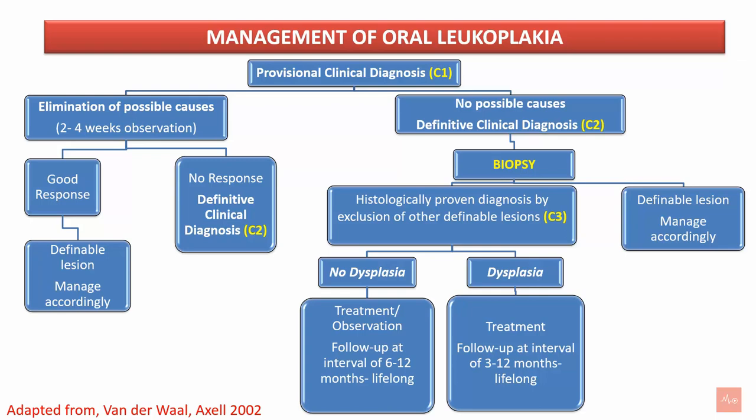Biopsy is advised and a histologically proven diagnosis is made by exclusion of other definable lesions. Once histological diagnosis is confirmed, one should look for dysplastic features. If there is no dysplasia, medical management and observation with follow-up at intervals of 6 to 12 months for life is recommended. If dysplastic features are seen, medical as well as surgical management with follow-up intervals of 3 to 12 months for life is recommended.